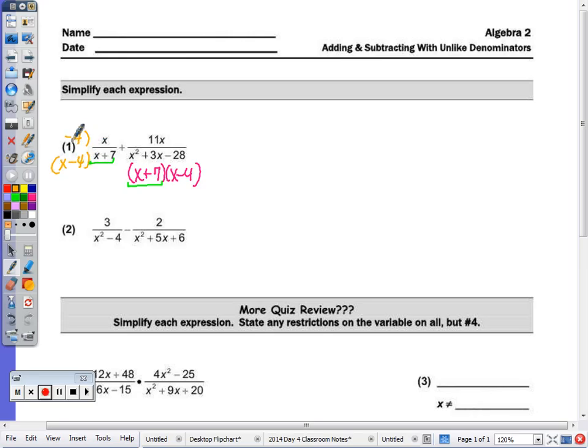Both the numerator and denominator so I can keep the fractions equivalent, and we're going to end up with x squared minus 4x over x minus 4 times x plus 7, plus the 11x again x minus 4 times x plus 7.